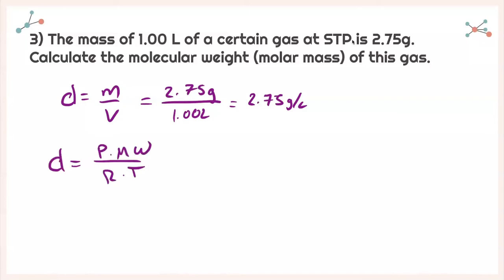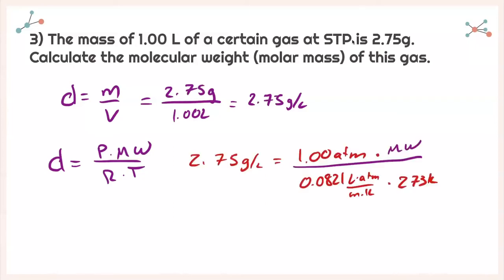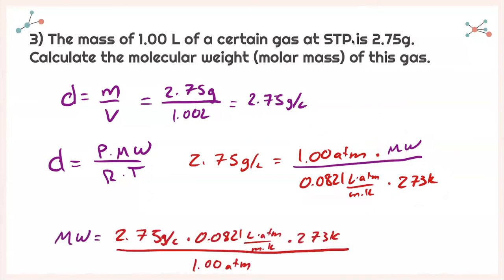We also know that density equals pressure times molecular weight divided by R times temperature. We're at standard temperature and pressure — 1 atmosphere at 273 Kelvin — and we know our R value. Isolating molecular weight and plugging all of that into our calculator, we get a molecular weight of 61.6 grams per mole.